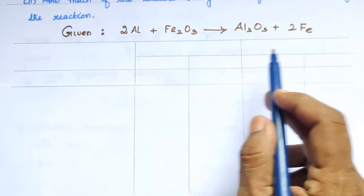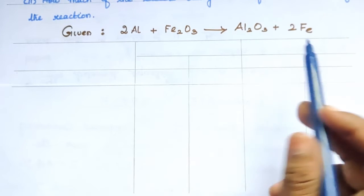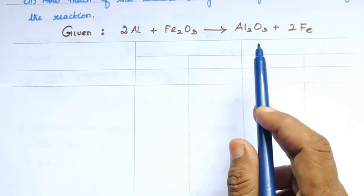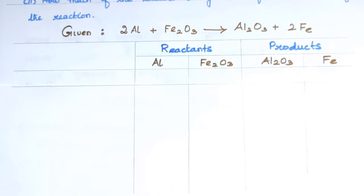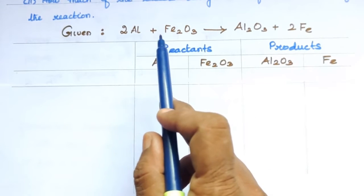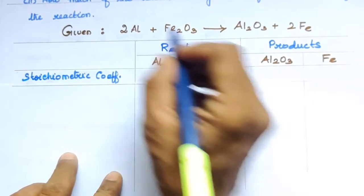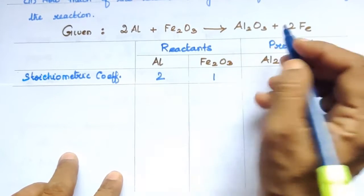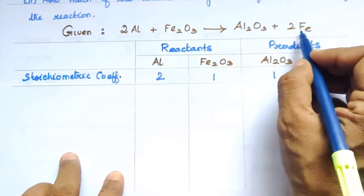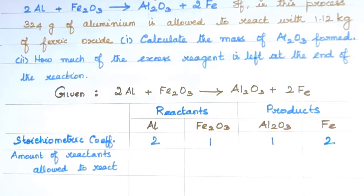We have reactants and products. The balanced equation has stoichiometric coefficients. For 2Al + Fe2O3 → Al2O3 + 2Fe: the stoichiometric coefficient of Al is 2, Fe2O3 is 1, Al2O3 is 1, and Fe is 2.